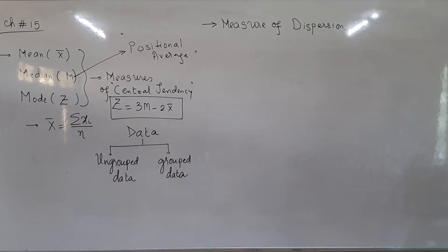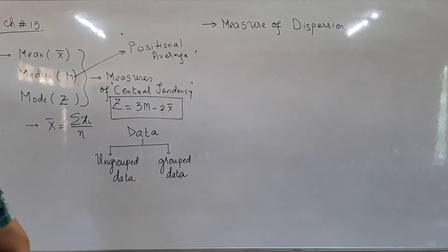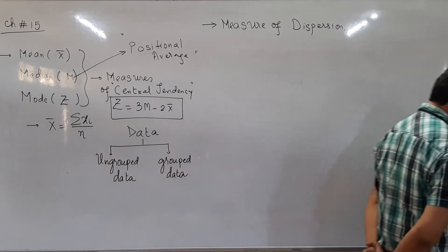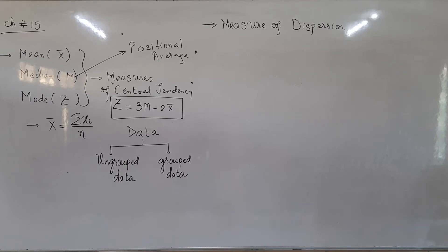Concepts are very important in statistics, so please remember these definitions. Data without frequency, in raw form, is called ungrouped data. Data with frequency, which is in an organized frequency distribution form, is called grouped data. This is something we have to perfectly remember and memorize.